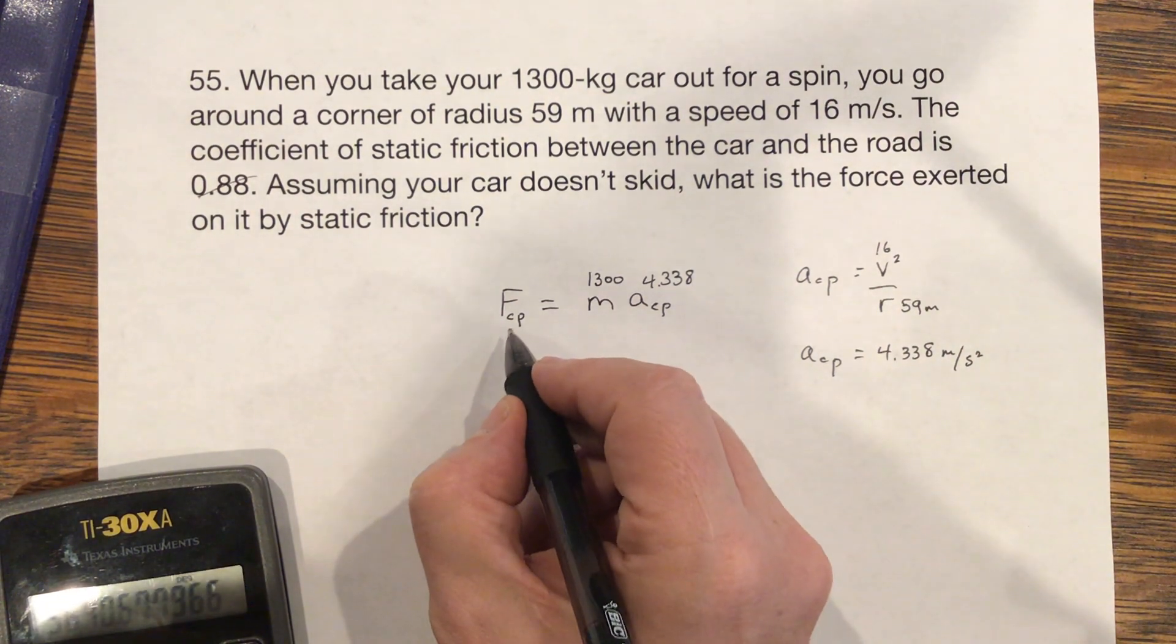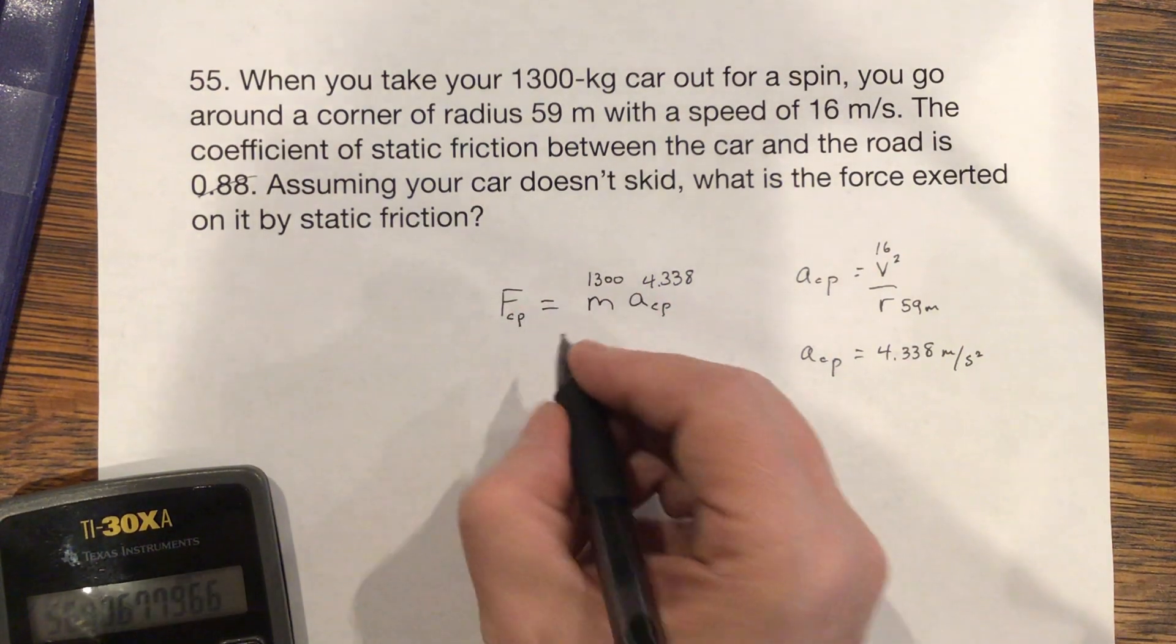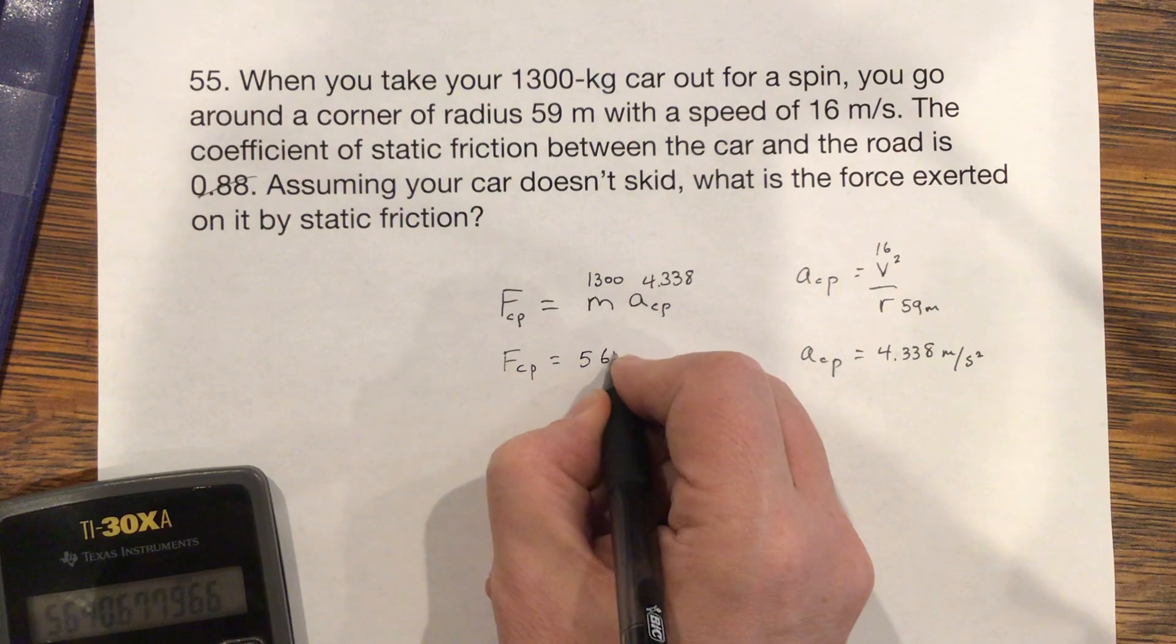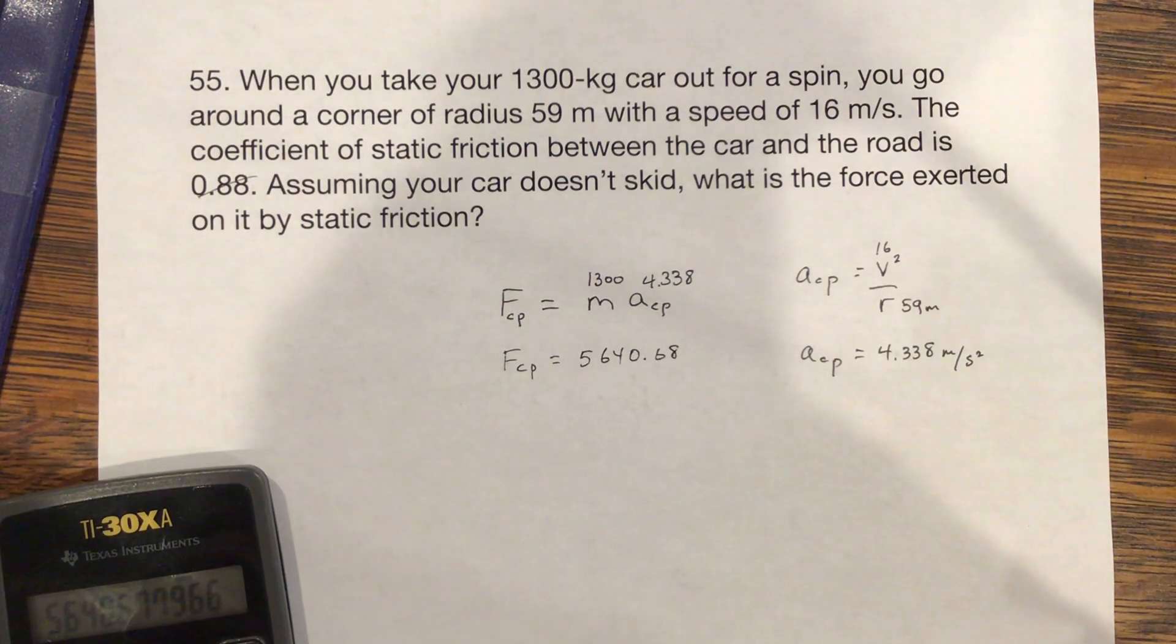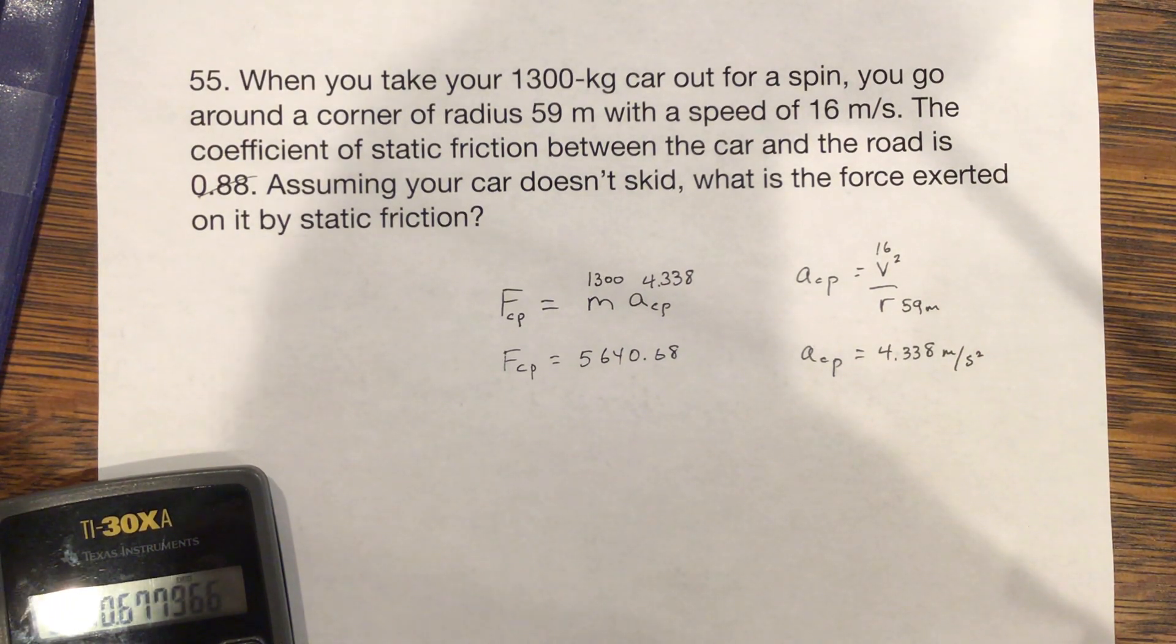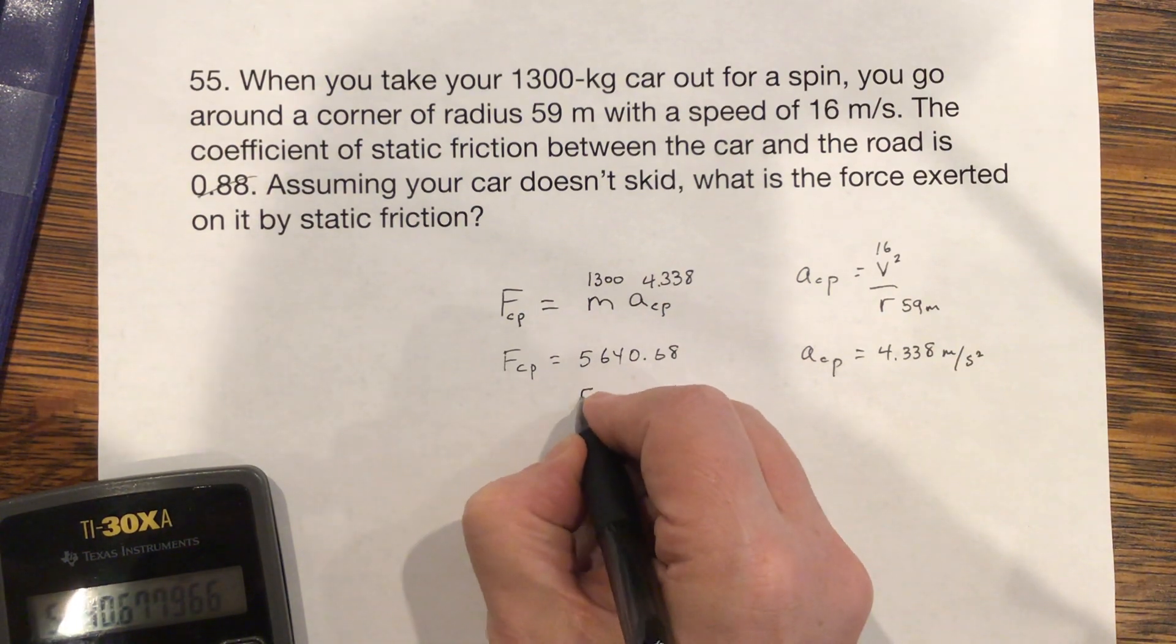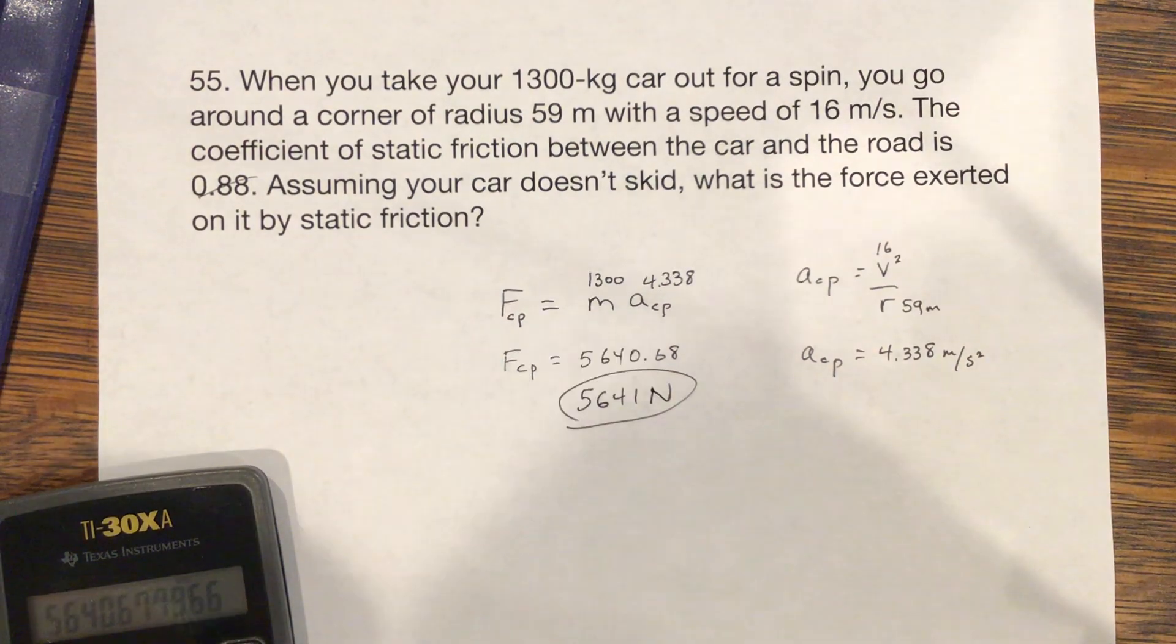All you need is the centripetal force, and that's the force exerted by friction. So the centripetal force is 5640.67, or 68, which depends on how you do it. I would probably just go to one significant figure, so this would be 5641 Newtons of force.